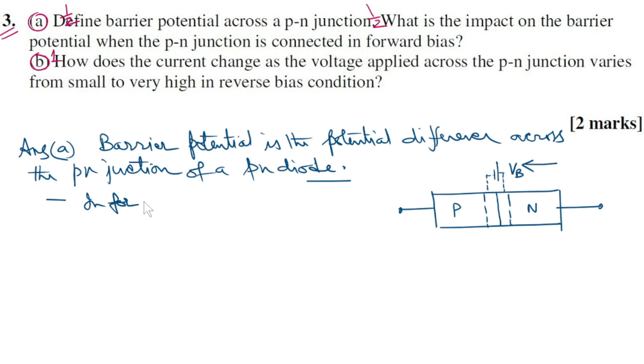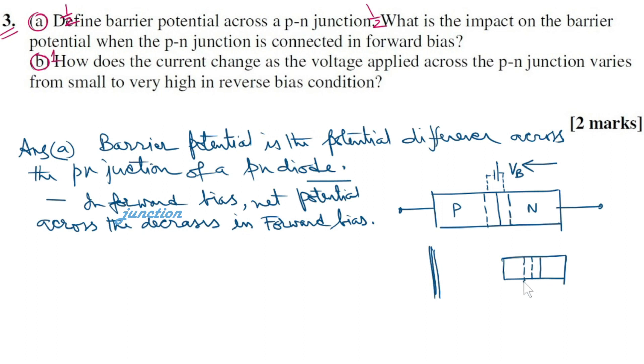In forward bias, net potential across the junction decreases. Quick explanation. Here is the p-n diode. This is the junction and the depletion layer across it. This is p-side. This is n-side. When it is forward biased, positive terminal is connected to p-side and negative terminal to n-side.